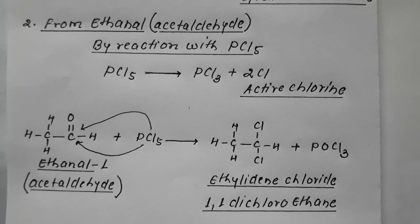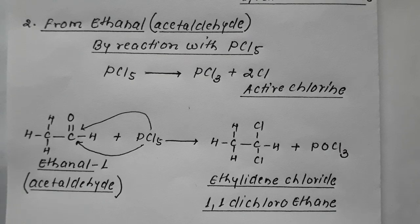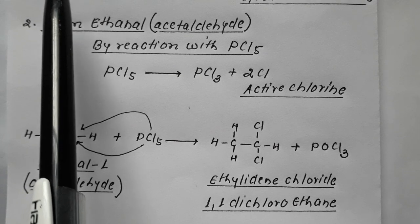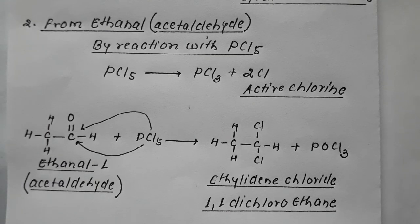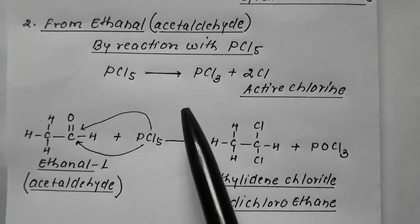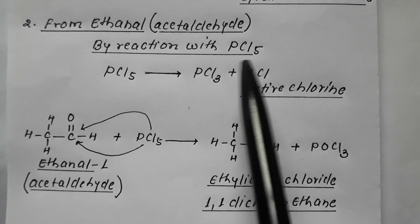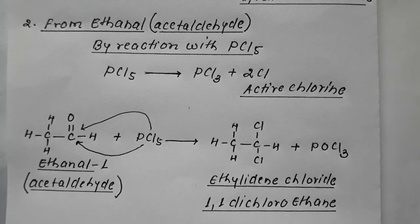To summarize: dihaloalkanes are of two types — alkylene type (vicinal halide) and alkylidene type (geminal halide). Ethylene chloride can be prepared by reaction of ethene with Cl₂, or by reaction of ethylene glycol with PCl₅. Ethylidene chloride can be prepared by reaction of acetylene with excess HCl, or by reaction of acetaldehyde with PCl₅.